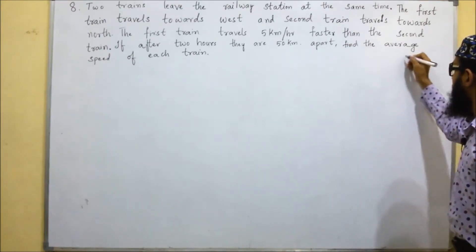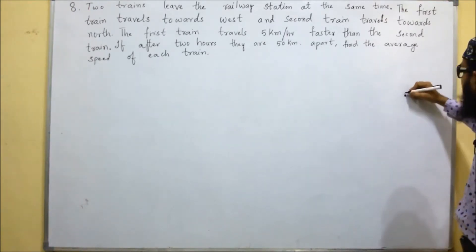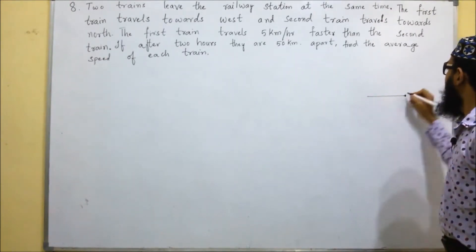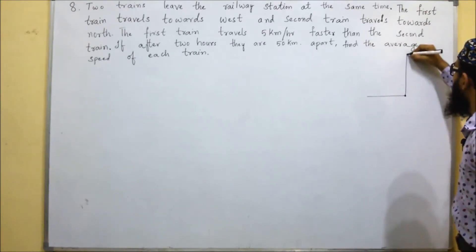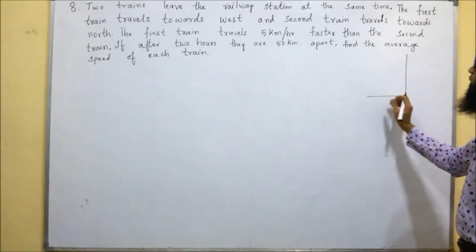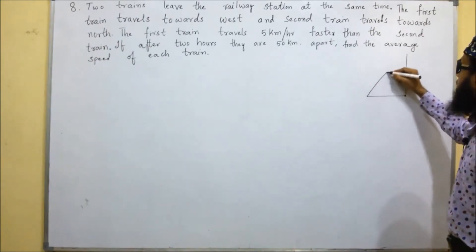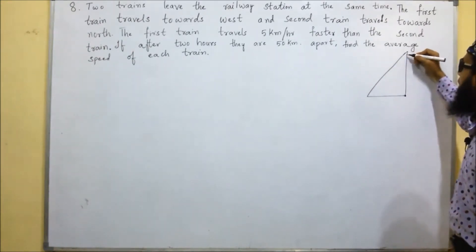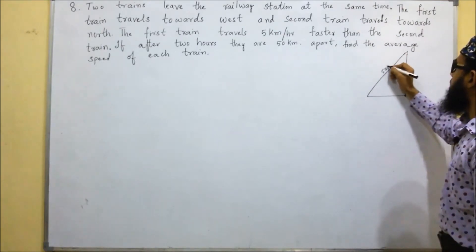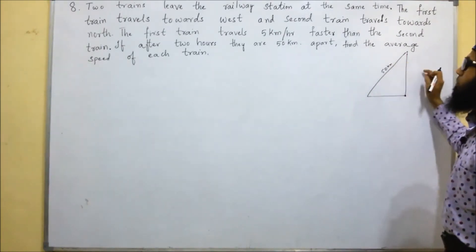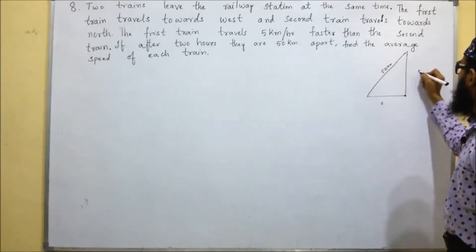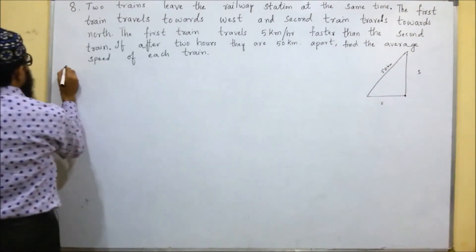This point is a railway station, so both trains have started from this point. The first train is travelling towards west and the second train is travelling towards north. The first train is 5 km per hour faster. After two hours, the distance between them is 50 km. We have to find the speed of each train.